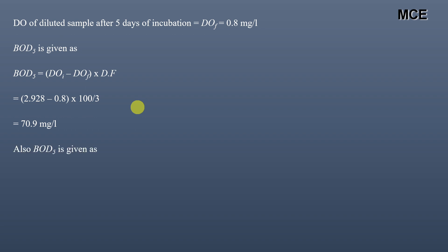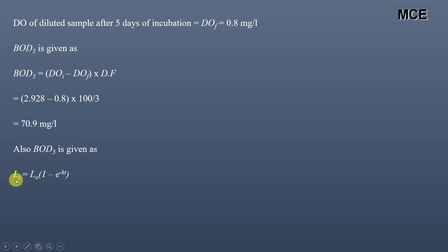Also, BOD5 is given by the equation: L_T = L_0 × (1 − e^(−KT)), where L_T is the BOD at time T (here BOD5 at 20°C), L_0 is the ultimate BOD, K is the rate constant, and T is the time period.